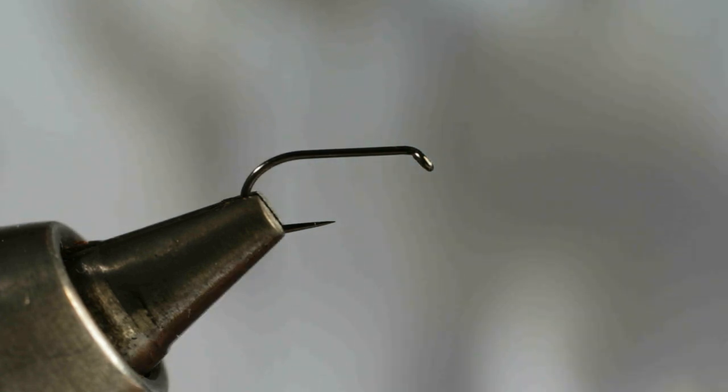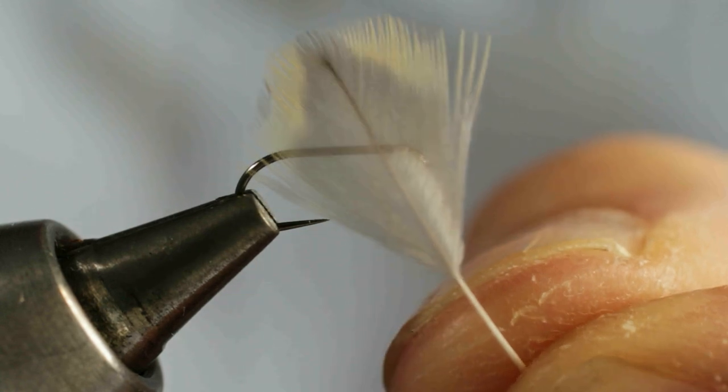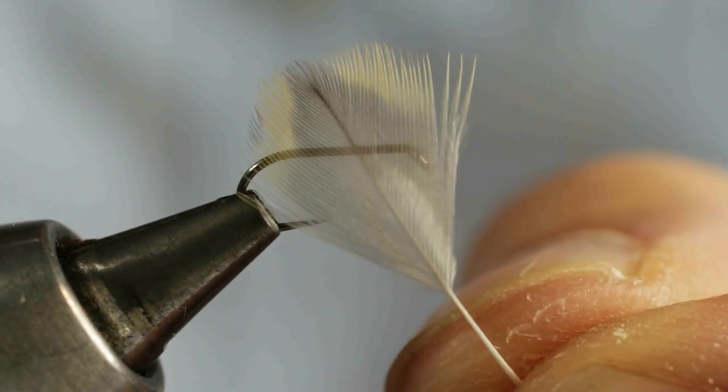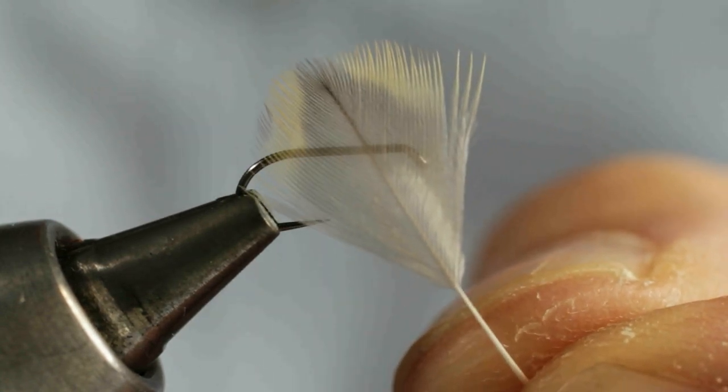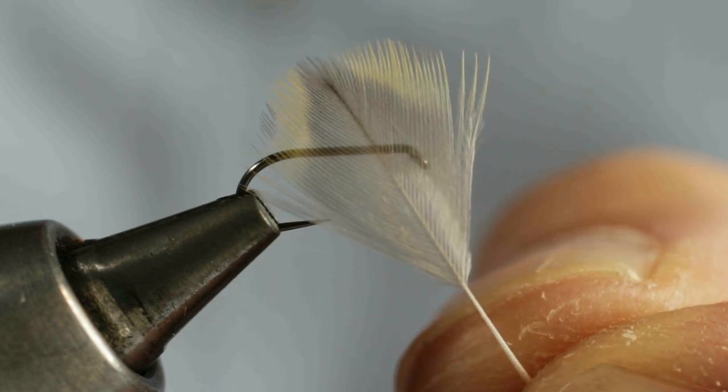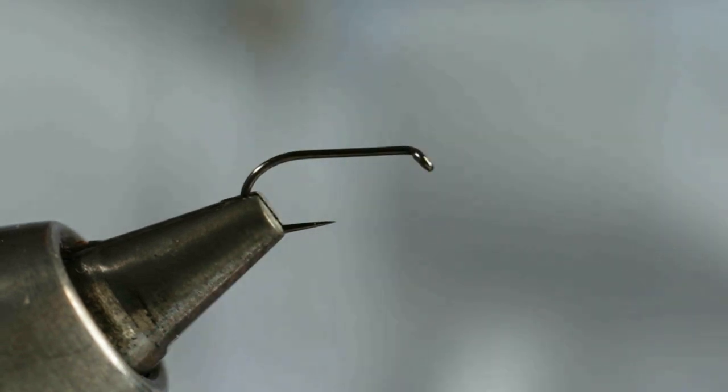So as I say the breast feather taken from the golden plover is slightly lighter in shade than the one that is illustrated in Pritt's book. So that's an important point to know.